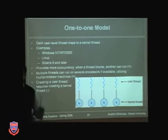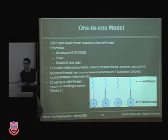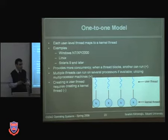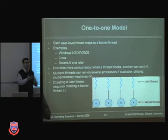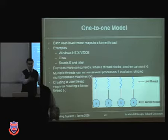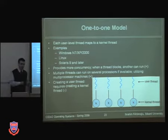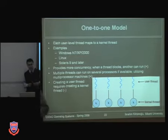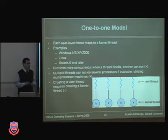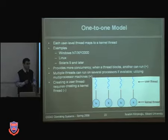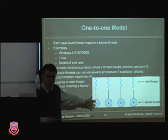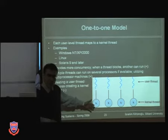Another model is the one-to-one model, where each user-level thread is mapped to a kernel-level thread. A kernel thread is created for each user thread. You don't need a user-level library to manage threads — the kernel itself supports threading. All common operating systems — Windows NT, XP, 2000, Linux — support threads in the kernel. When you create a thread, the kernel creates and manages it, allocating a TCB for each thread.